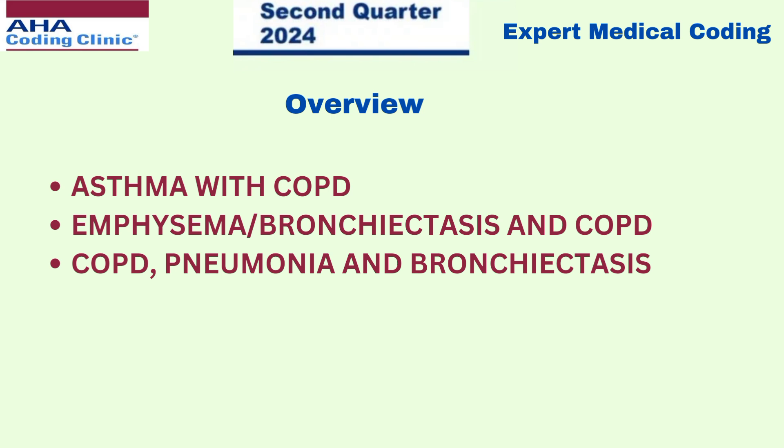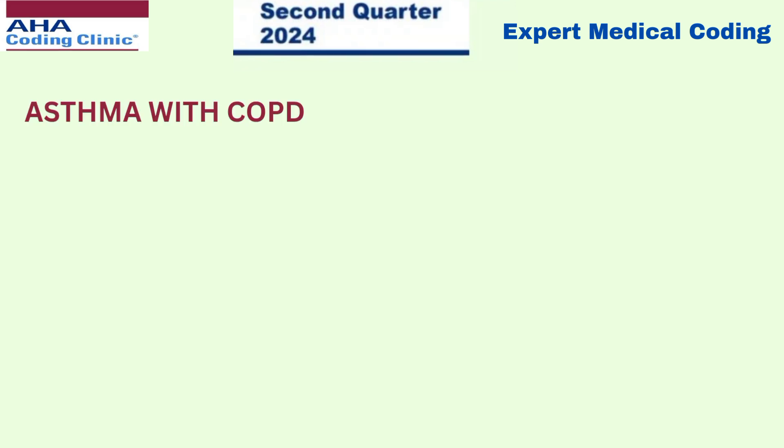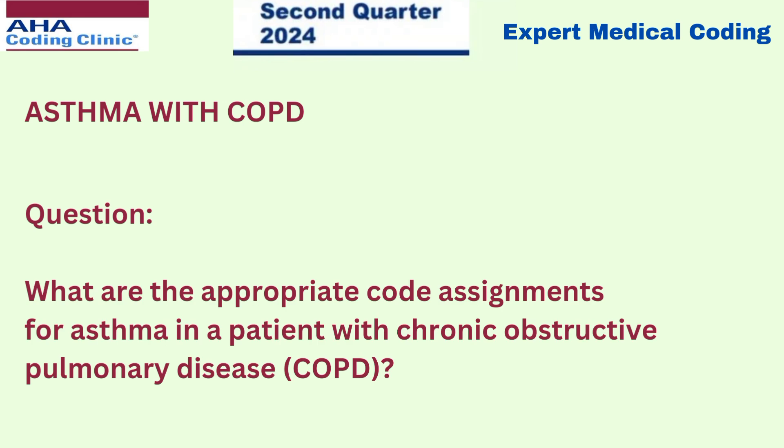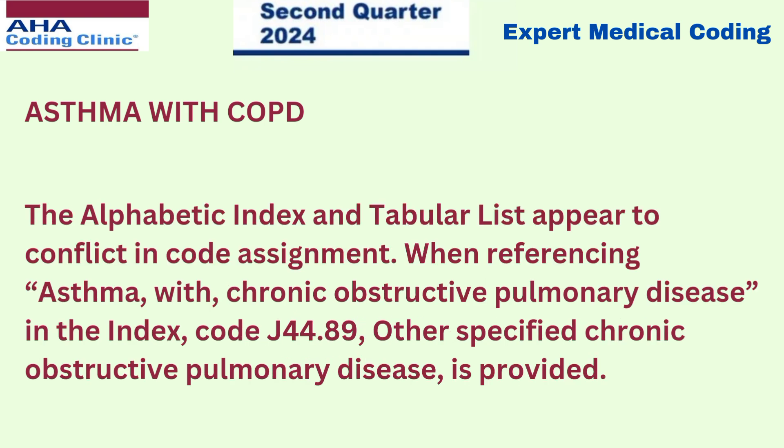Let's get started with the first one — asthma with COPD. The question is: what are the appropriate code assignments for asthma in a patient with chronic obstructive pulmonary disease? The alphabetical index and tabular list appear to conflict in code assignment. When referencing asthma with chronic obstructive pulmonary disease in the index, code J44.89 — other specified chronic obstructive pulmonary disease — is provided.